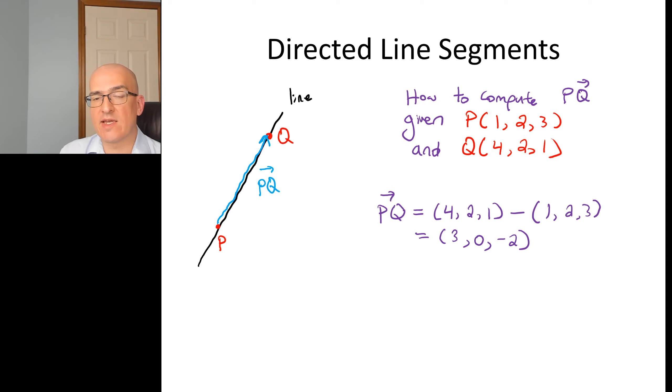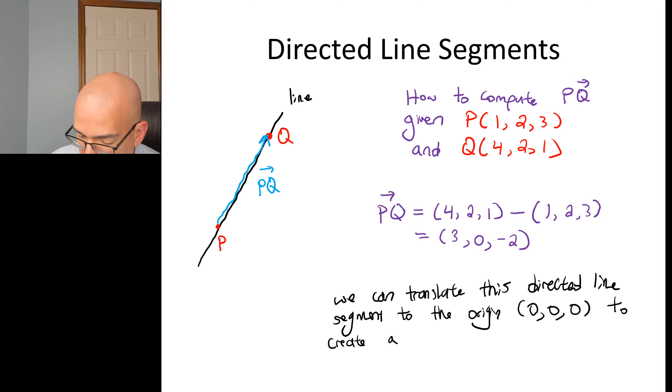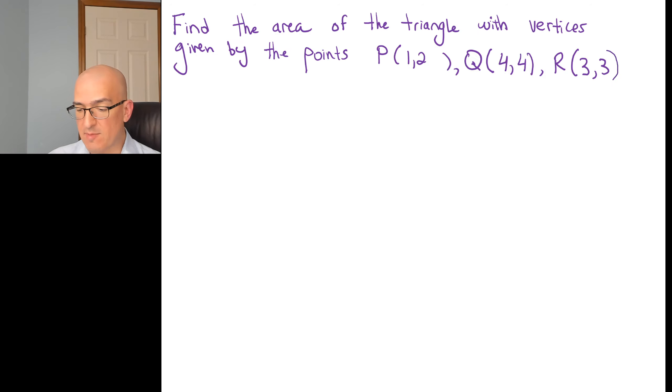So that's how we would construct a directed line segment that goes from point P to point Q. If we translate, we can translate this directed line segment to the origin, 0, 0, 0, to create a vector. And I'll give that vector a name, vector U, which is 3, 0, minus 2. This is a vector that is parallel to this directed line segment and it has the same length. And we're about to need that in order to calculate the area of a shape that is defined in terms of points.